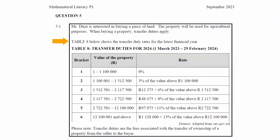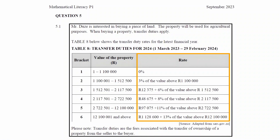Table H shows the transfer duty rates for the latest financial year. The first column lists the brackets for each range of property value. The second column lists the range of values for the property in rands, and the third column lists the rates for each bracket. There is a note that states that transfer duties are fees associated with the transfer of ownership of property from the seller to the buyer. In other words, transfer duties are taxes paid to the government by the buyer when the property changes ownership from the seller to the buyer, and it's calculated on the value of the property.